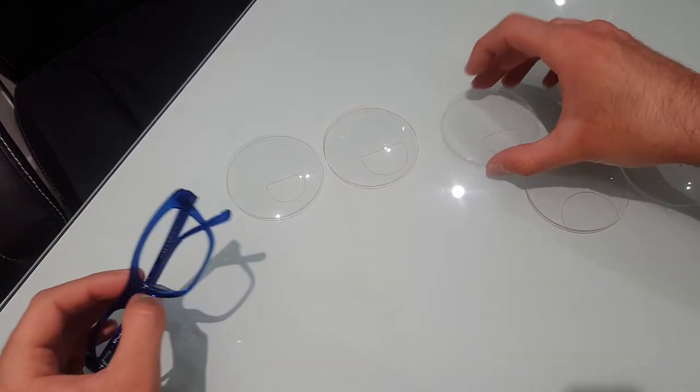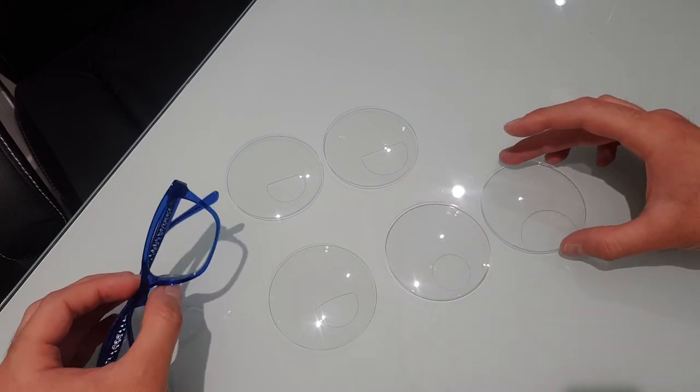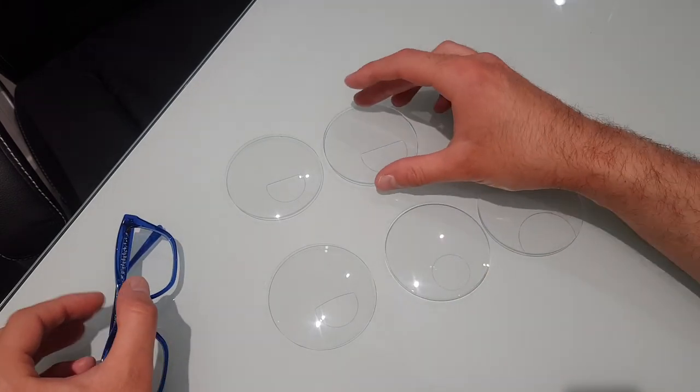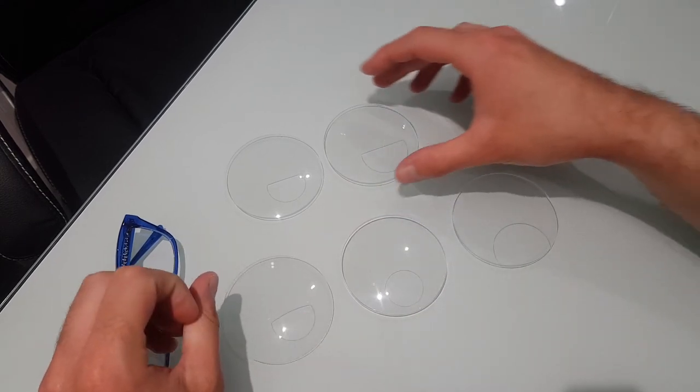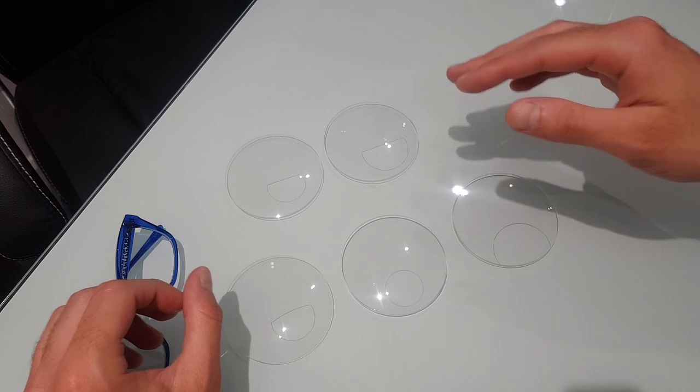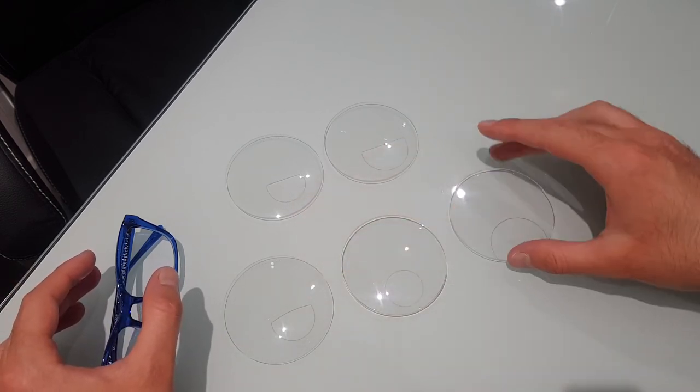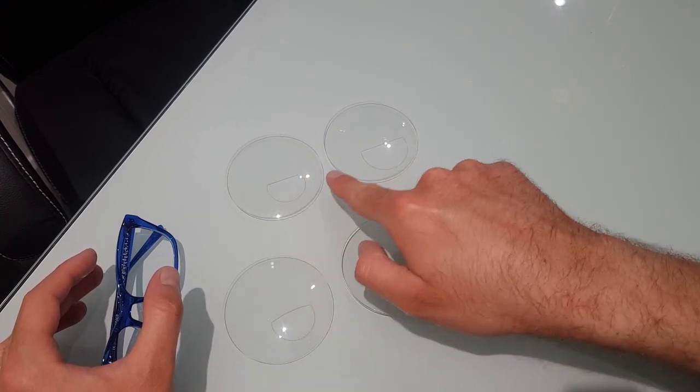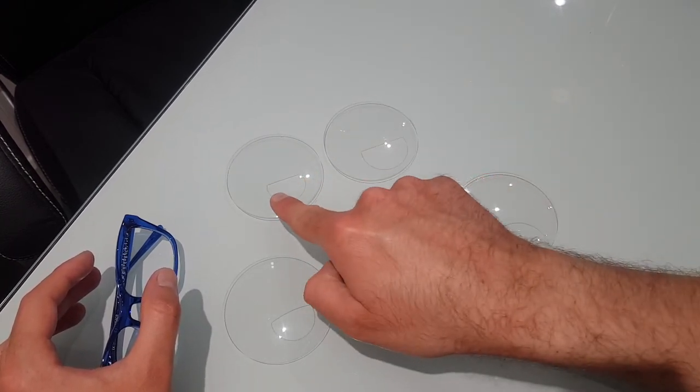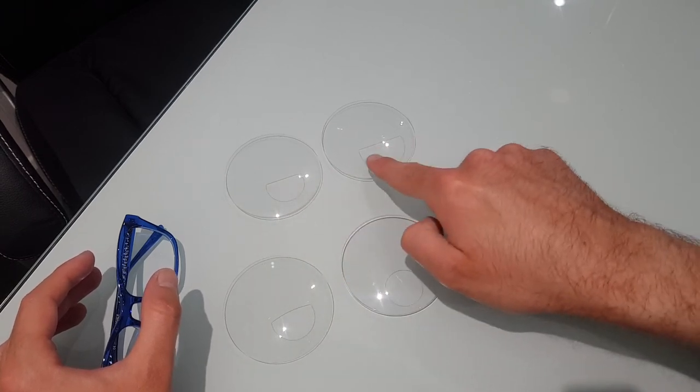So I hope that makes sense. Let me know in the comments below if you've tried any of these or you've got any questions about it because it is a bit of a tricky thing to get your head around. Hopefully these examples have shown you some real good hands-on examples of what the different types of segment are. Just to recap, we've got D-segs because it's the shape of a D and the number after that represents how wide that top part is.